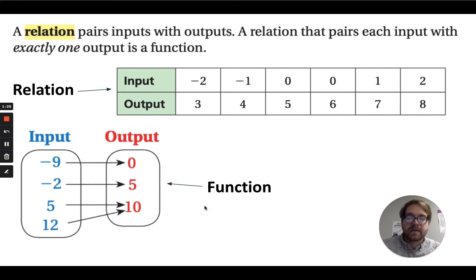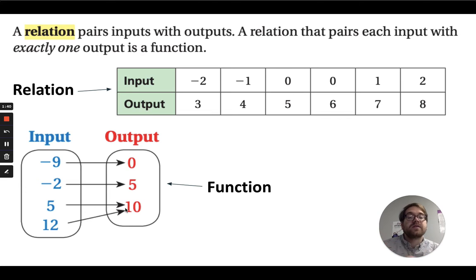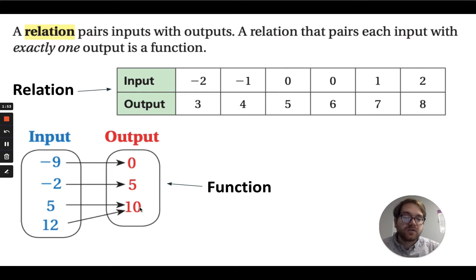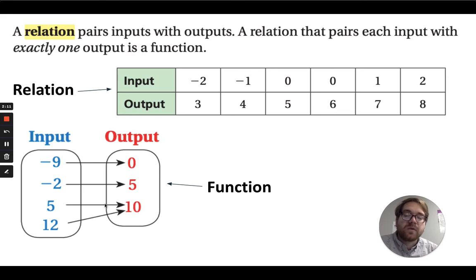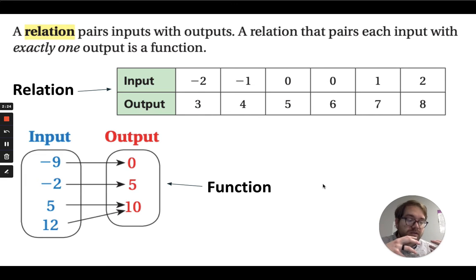Down here in this mapping diagram is a function, because this is showing all the inputs going to one output. Two different inputs are going to one output, and that's okay — that's still a function. Each input is still paired with only one output. That's a specific type of relationship between values: exclusive from one input to one output.